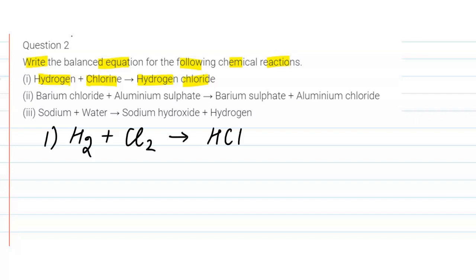To balance the atoms, we check the number of atoms on both sides of the equation. We have two atoms of hydrogen on the left-hand side and two atoms of chlorine on the left-hand side, so we write 2 HCl. This is our balanced chemical equation.